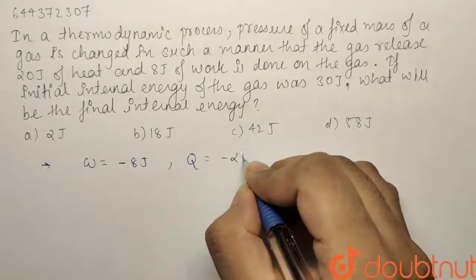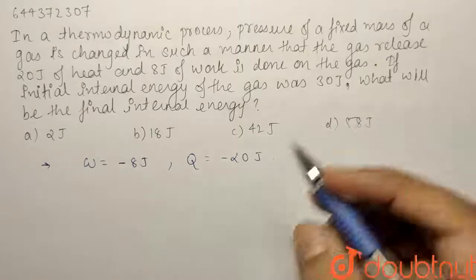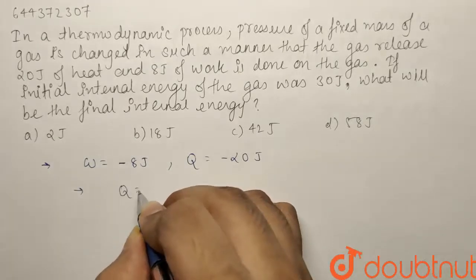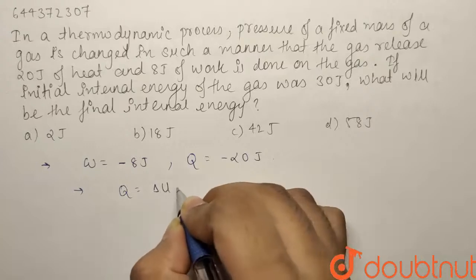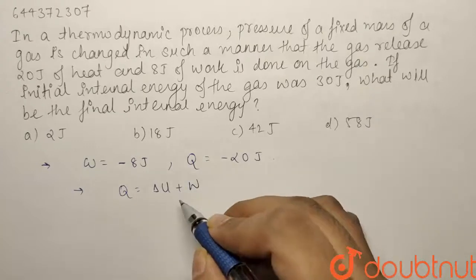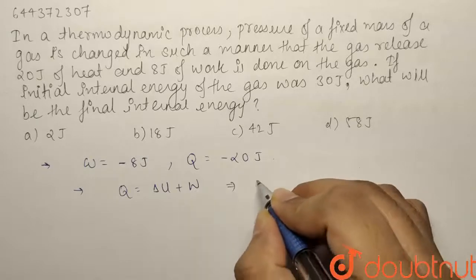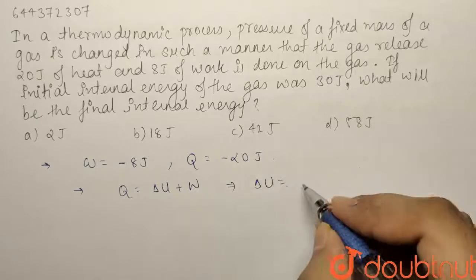we take it as negative as it is a loss of energy. Now using the first law, we know that Q equals delta U plus W, that is change in internal energy plus work done. So we will simply put in the values.